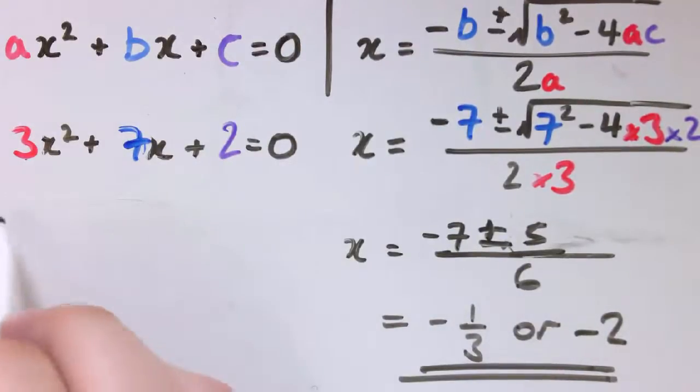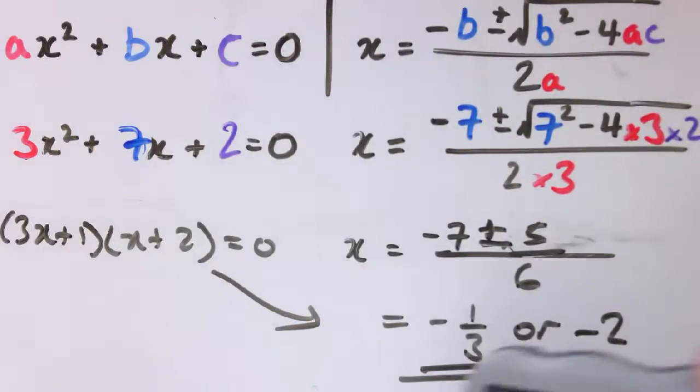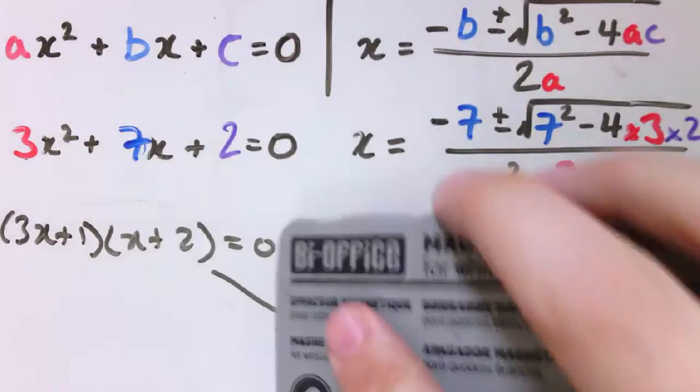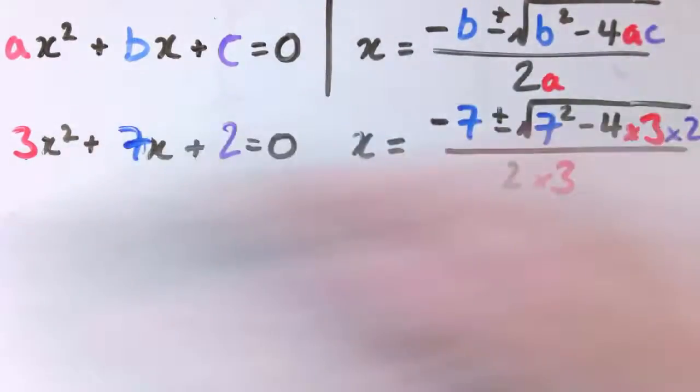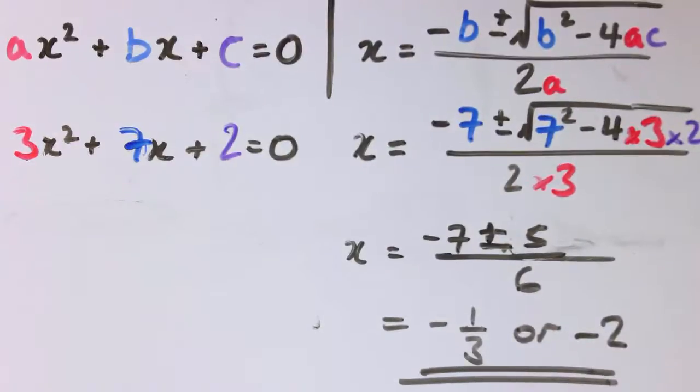This one's come out nicely. We could also have done this one by factorising. It would have been 3x plus 1 times x plus 2 equals 0, and we'd have come to the same conclusion. But we can just plug it into the formula, and that tells us the two values of x that work. Or sometimes it could be only one value if the thing in the square root is 0, and sometimes there actually aren't any solutions. The thing in the square root might come out to be negative. But if there are solutions, this will find them.